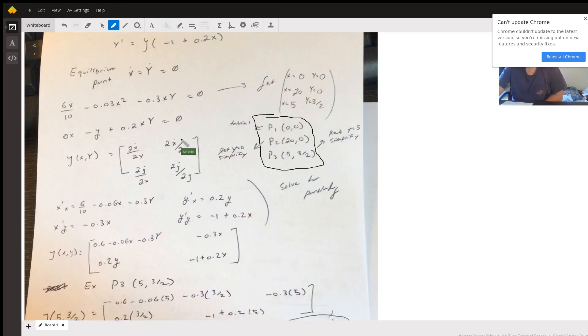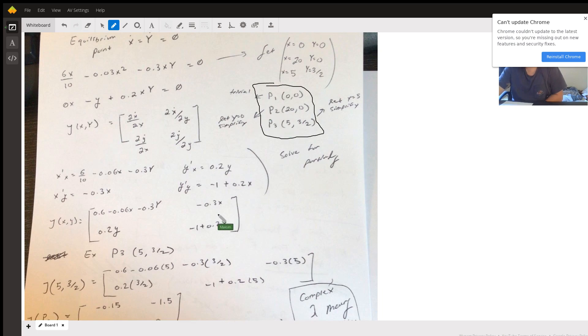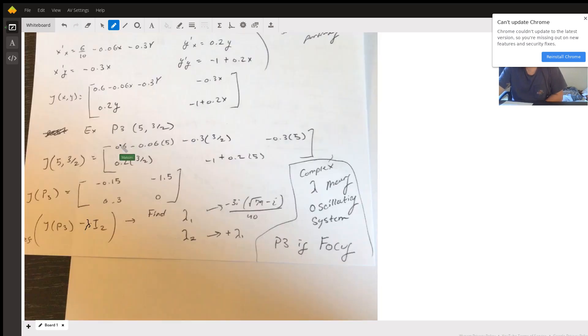If you repeat this process by plugging in p1 and p2, you will reach the point where you have these two eigenvalues, and depending on what they are, let me put these down here.